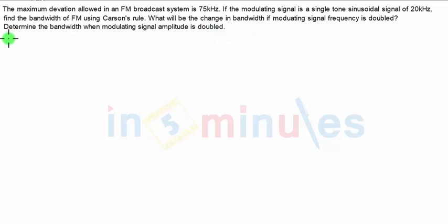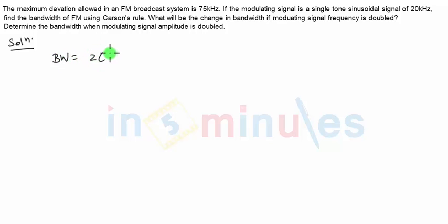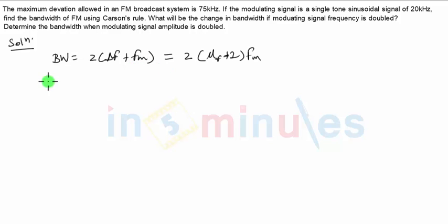So there are a couple of questions before we find out the bandwidth of the FM signal. Carson's rule approximates the bandwidth necessary to transmit an angle modulated signal, which could be frequency modulated or phase modulated. The expression for this bandwidth is 2(Δf + fm), which can also be written in the form of modulation index as 2(μf + 1)·fm, where fm is the modulating signal frequency — given as 20 kilohertz — and Δf is the peak frequency deviation.